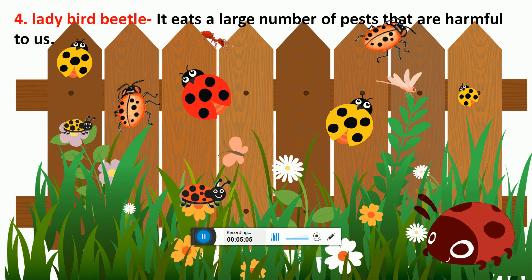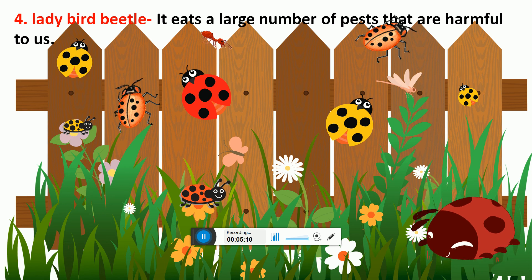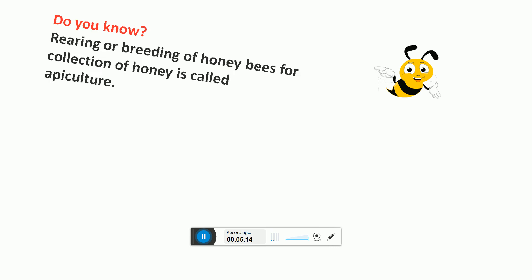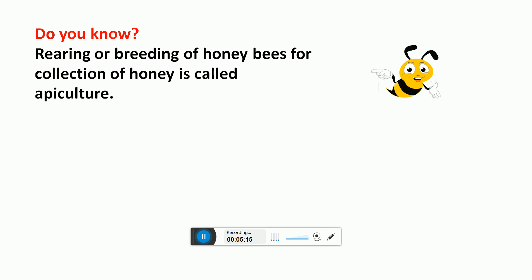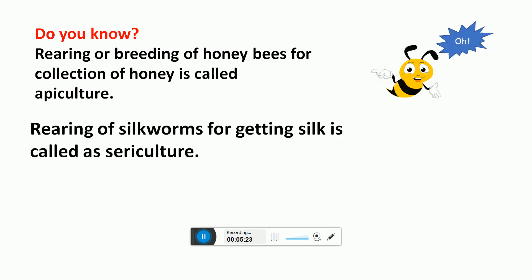Ladybird beetle: It eats a large number of pests that are harmful to us. Do you know? Rearing or breeding of honey bees for collection of honey is called apiculture. Rearing of silk worms for obtaining silk is called sericulture.